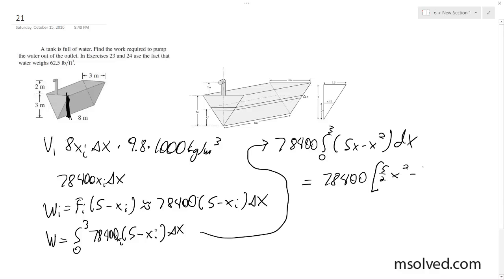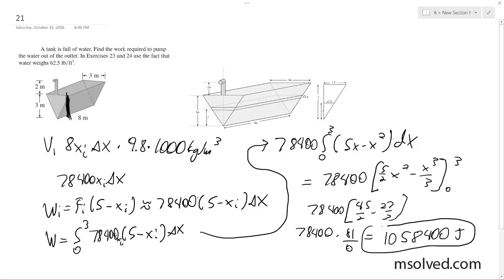Evaluating: 5x minus x squared over 2, from 0 to 3... 45 over 2 minus 27 over 2... we get 78,400 times 81 over 6, which is 1,058,400 joules. That's it, that's the work.